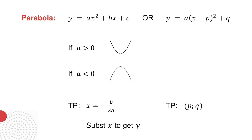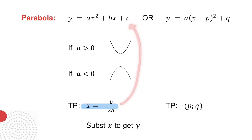In the first form, to find the axis of symmetry, you use x equals minus b over 2a, and then you substitute that value into the original equation to get your y value at the turning point. In the second form, the bracket gives you the x value at the turning point, and the number after the bracket gives you the y value.